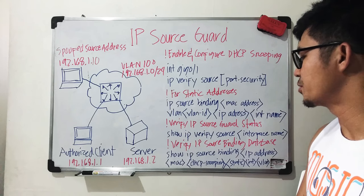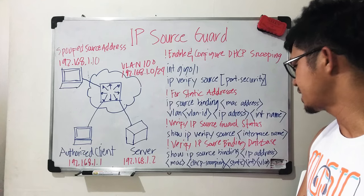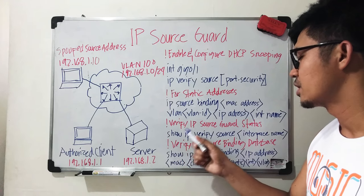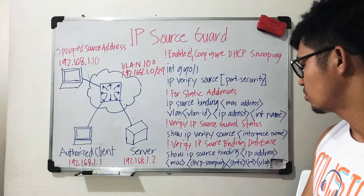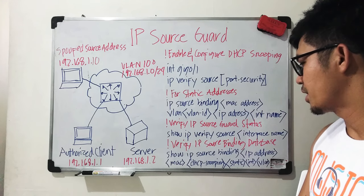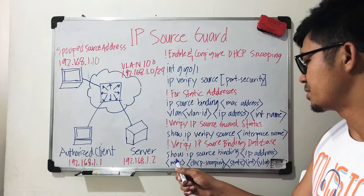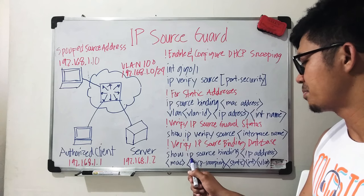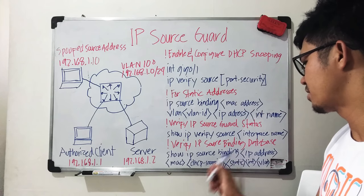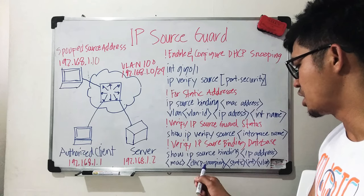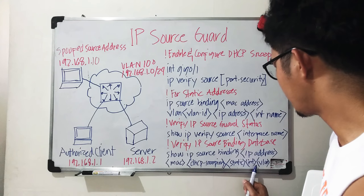If you need to verify the IP Source Guard status, you can do 'show ip verify source' followed by the interface name. And if you want to verify the IP source binding database, you can do 'show ip source binding' with either an IP address or MAC address, specifying either DHCP snooping or static, along with the interface name and VLAN ID.